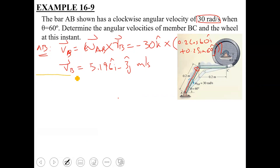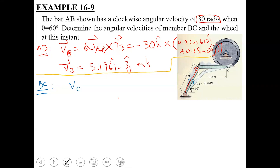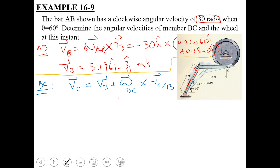Moving forward, for the next link in general plane motion we write the relative velocity equation. We take B as our base point because the motion of B is already known. So the equation becomes: V_C equals V_B plus omega_BC cross R_{C/B}. This is the relative velocity equation applied to link BC in general plane motion, with B as the base point.